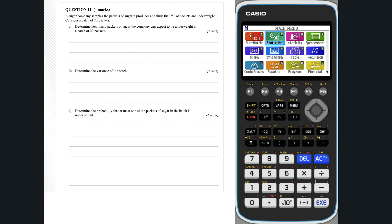Question 11 part a. This question can be approached by considering the random variable x where x is equal to the number of underweight sugar packets in a batch of 20.